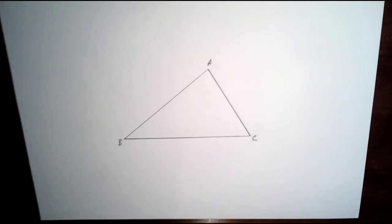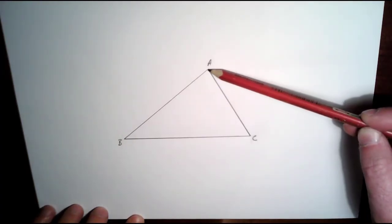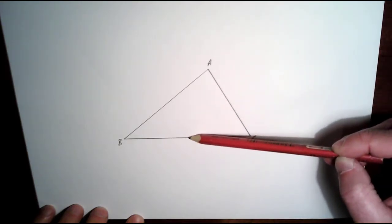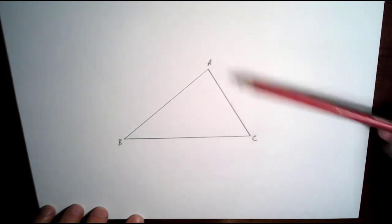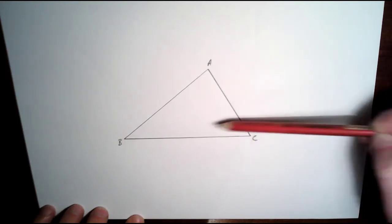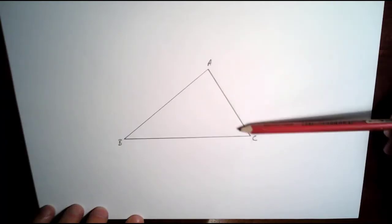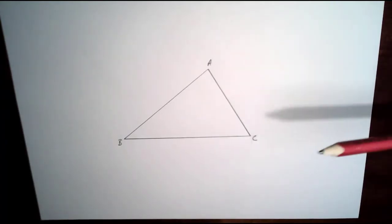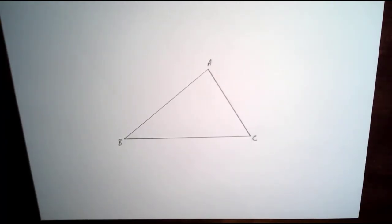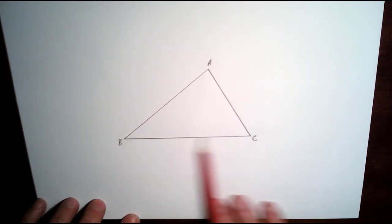Medians are the lines that go from one vertex to the midpoint of the opposite edge — so from A to somewhere around here, from C to somewhere around here, from B to the midpoint of this line segment. Where they intersect, that's your centroid. So what we've got to do first is find the midpoint of an edge.